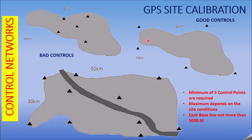To establish a site calibration, you need a minimum of three control points — the maximum depends on site conditions. For a site like 20 kilometers by 10 kilometers, make sure each primary control point is no more than 5 kilometers apart. You can then take intermediate points closer to the site, less than 5 kilometers apart. If the site is smaller, scale down the distance between control points accordingly, and ensure they are evenly distributed to get the best fit for your GPS calibration.